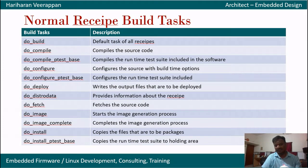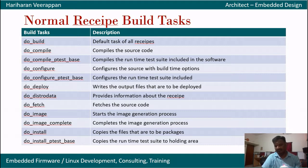Under normal recipe build tasks, do_build is the default task for all recipes. do_compile basically compiles the source code, and do_configure configures the source with respect to build-time options.